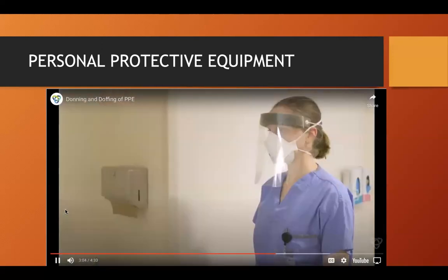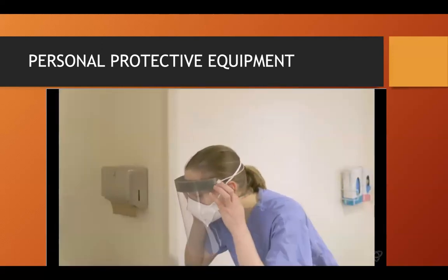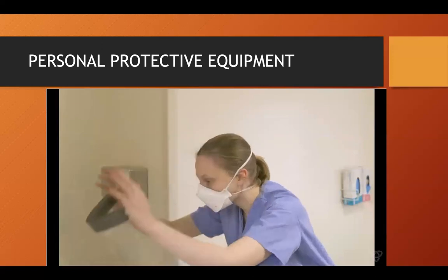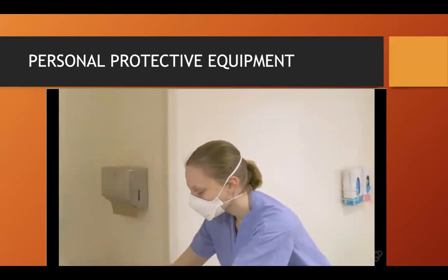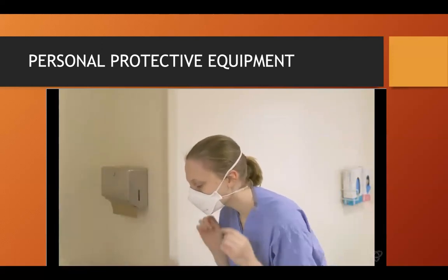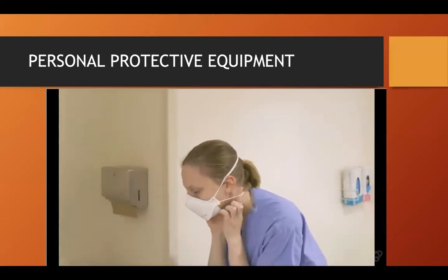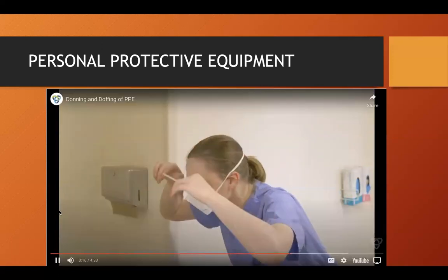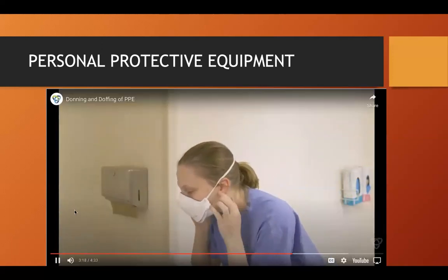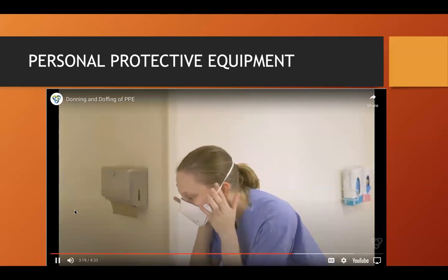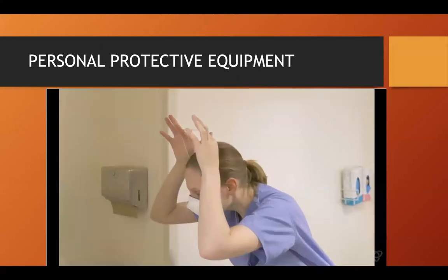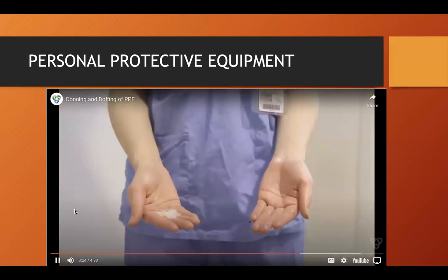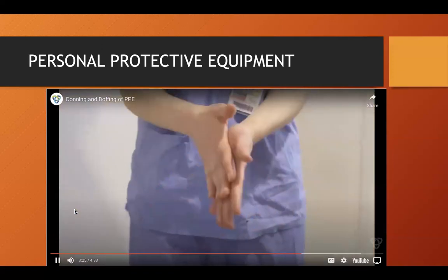Remove the face shield by leaning forward, pulling the strap forward and away from you, then place into the garbage. Remove the N95 mask without touching the exterior part. Pull it forward and away from you by starting with the bottom strap and then the top, then place it into the garbage. Perform hand hygiene again.